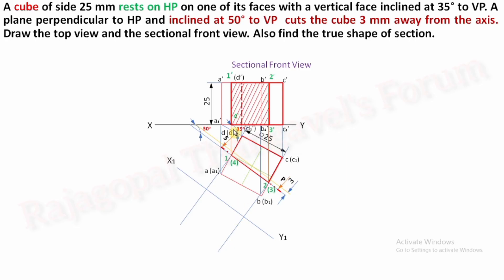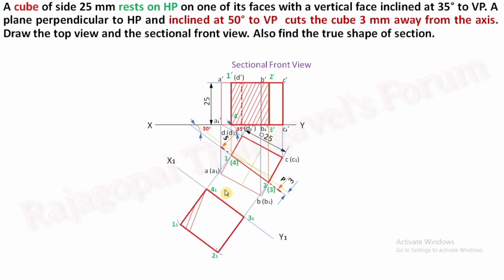Now convert this shape into the true shape of section. Measure the distance from XY to 1', use this point as center and that distance as radius to identify point 1,1. Next is 2' — use the same method to place your compass and draw another arc to mark it as 2,1. For 3' and 4', which are exactly on XY, the respective projectors give us 3,1 and 4,1 directly. Now join all these points — 1,1; 2,1; 3,1; 4,1 — and do hatching for this final true shape of section. This is the true shape of our section of a cube.